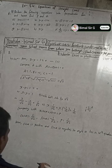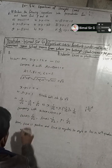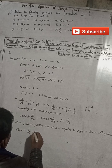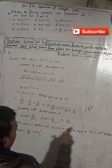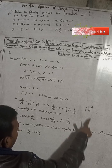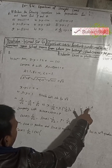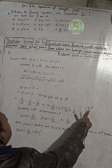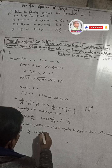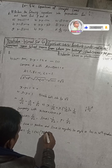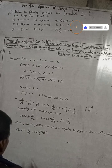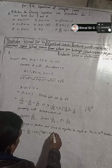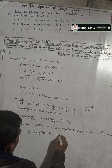Now cosα equals 1 by root 2. Since α is in the fourth quadrant, that means α equals 360 minus 45, which is 315 degrees. So we can write cosα equals cos 315 degrees.